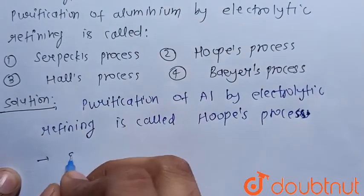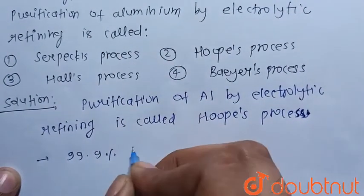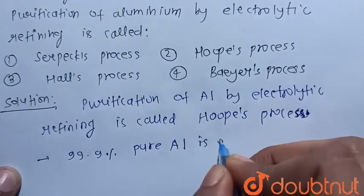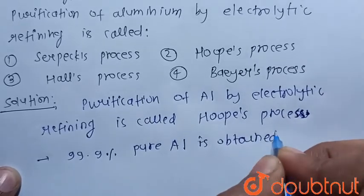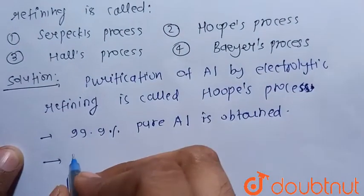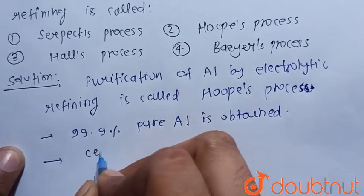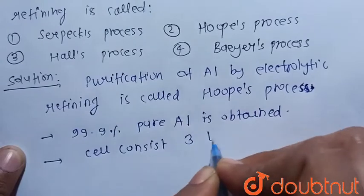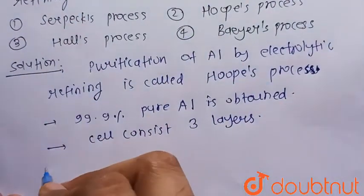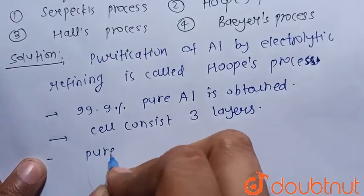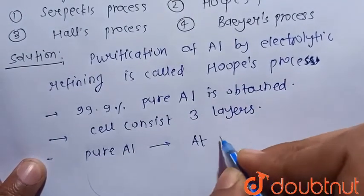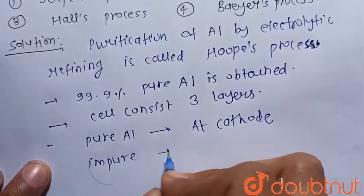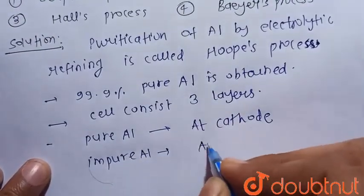In this method, 99.9% pure aluminium metal is obtained. The cell used in this method is a three-layer cell, and in the cell pure aluminium is deposited at the cathode, while impure aluminium is deposited at the anode.